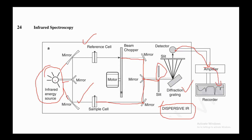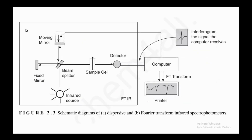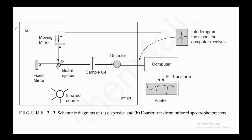Again summarizing: radiation goes to the sample beam and into the beam chopper, from the beam chopper to the slit, from the slit to the diffraction grating, then to the detector, from the detector to the amplifier, and from the amplifier you get the spectrum. That is the dispersive IR — figure A. Now let's look at the Fourier transform IR, which is figure B.